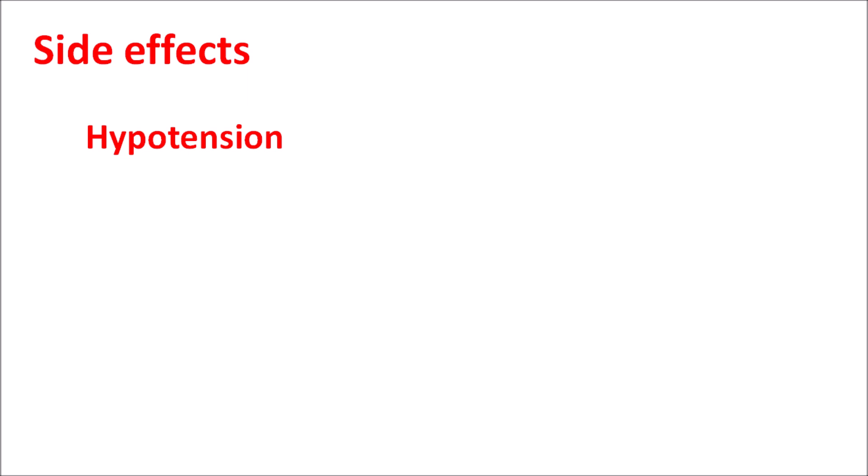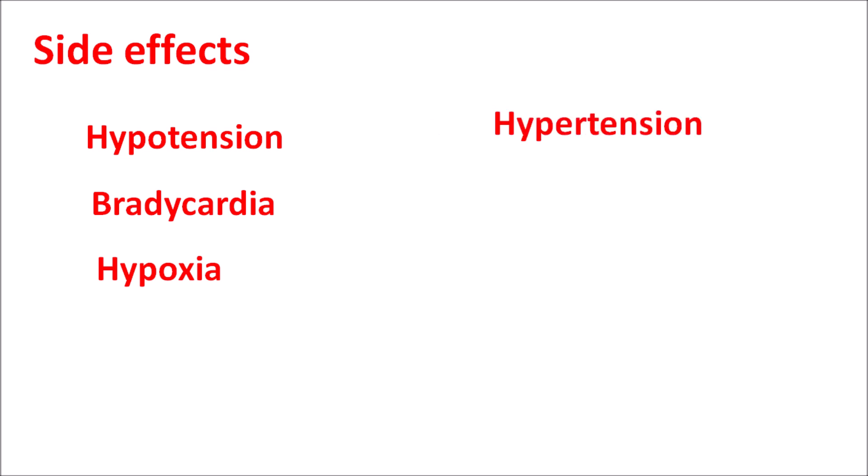The important side effects of remimazolam include hypotension observed during induction and recovery, bradycardia, hypoxia, and sometimes blood pressure fluctuations resulting in hypertension. It can also increase heart rate resulting in tachycardia, and produce upper respiratory tract infections resulting in cough and pharyngitis. At toxic doses, it can both reduce and suddenly increase blood pressure, and both reduce and increase heart rate — these fluctuations should be closely monitored. Any toxic effects can be counteracted by flumazenil, the benzodiazepine antagonist.